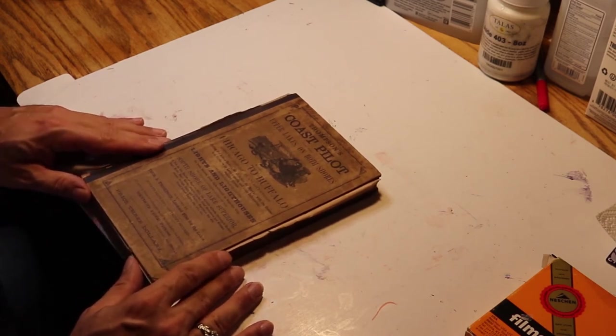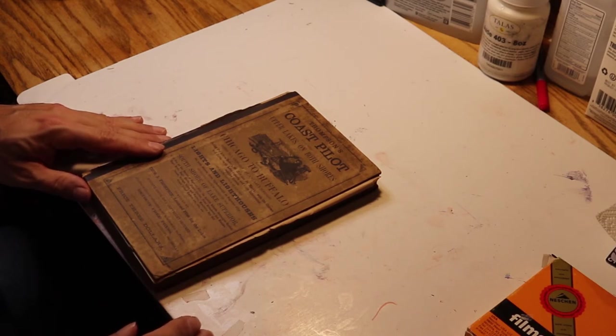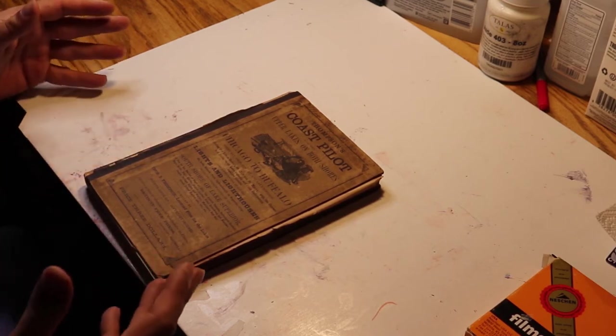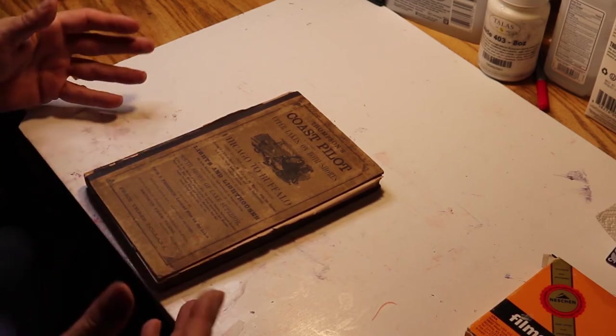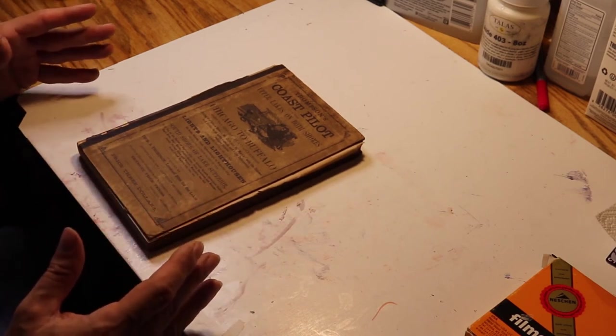This book needs essentially to be refastened. It also needs some cosmetic work. Now, in antiquarian books, you don't want to get carried away with the cosmetic work. It should have a patina. It should look old. But we have to make this book stable so it can be handled.